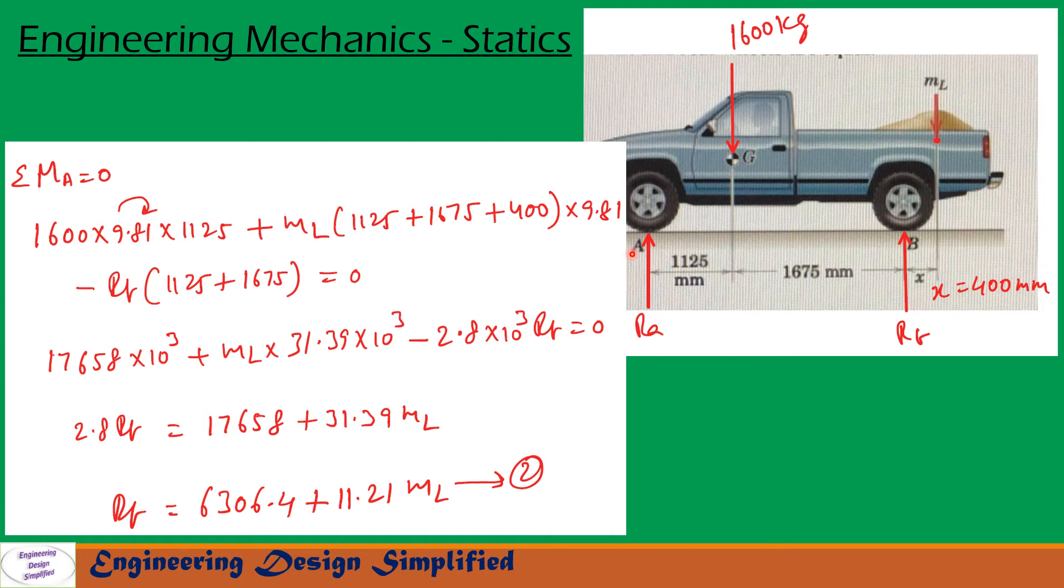Now let us take moments about A. So RA won't create any moment about A. This force 1600 into 9.81 and ML into 9.81 will create clockwise moments about point A and this reaction RB creates counterclockwise moment about point A. Now let us write moment equation, sigma MA equal to 0. So 1600 into 9.81 that is force, mass into acceleration due to gravity that is force into this distance from A to this G is 1125 mm. So that is written here. Plus ML, this mass into 9.81 into this distance, 1125 plus 1675 plus 400.